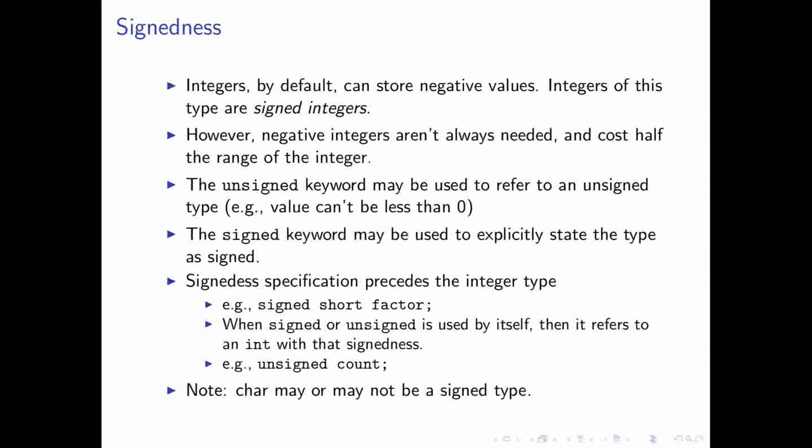So, now we also have, for integers, this quality of signedness. And signedness is this quality of an integer that determines whether or not you can store negative values in the integer. And the reason for this is because you don't always need negative integers, and they cost you half your range in most implementations.